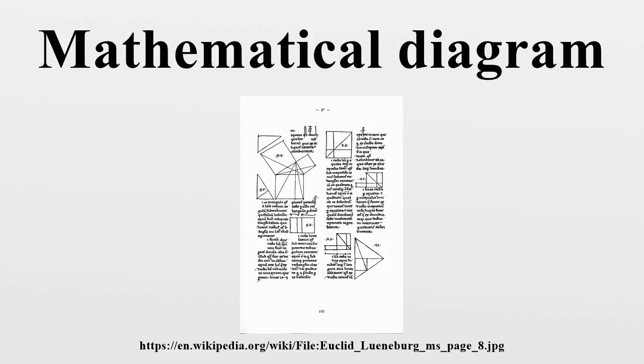In the simplest case, we are given a set of points s in the plane, which are the Voronoi sites. Each site s has a Voronoi cell v consisting of all points closer to s than to any other site. The segments of the Voronoi diagram are all the points in the plane that are equidistant to two sites. The Voronoi nodes are the points equidistant to three sites.